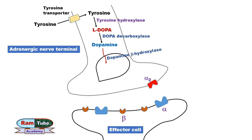The next step involves transport of dopamine into pre-synaptic vesicles, where dopamine in the presence of the enzyme dopamine beta-hydroxylase converts into norepinephrine, where it is stored to avoid degradation.